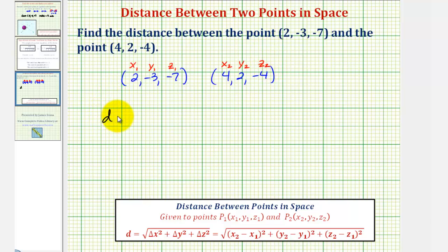And therefore, the distance will be equal to the square root of (x₂ - x₁)², which would be (4 - 2)², plus (y₂ - y₁)², which would be (2 - (-3))²,